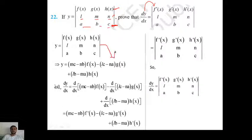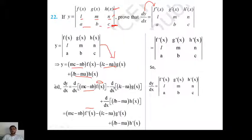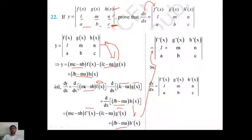Expanding the determinant with respect to the first row: y = f(x)·(cm - bn) - g(x)·(lc - na) + h(x)·(lb - ma). Differentiating with respect to x, the bracket terms are constants. So dy/dx = f'(x)·(cm - bn) - g'(x)·(lc - na) + h'(x)·(lb - ma). That gives you dy/dx in determinant form with f'(x), g'(x), h'(x) in the first row and l, m, n and a, b, c in the remaining rows.